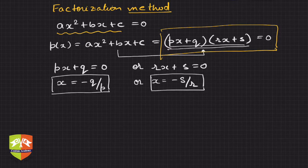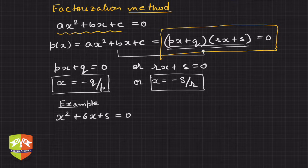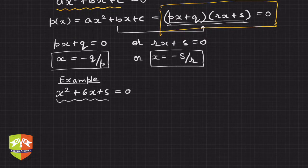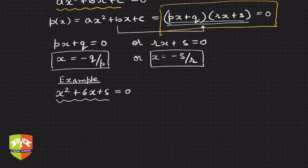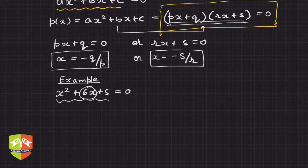Let us take an example: x² + 6x + 5 = 0. We are going to solve this quadratic equation. On the left-hand side we have a quadratic polynomial with three terms, so we use a common method called splitting the middle term. Those who do not know the splitting the middle term method are advised to go through previous lectures on factorization, but we will repeat the process here.